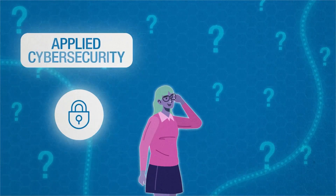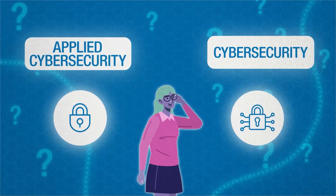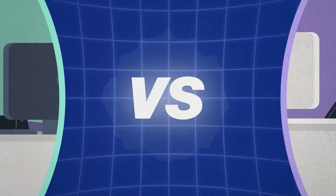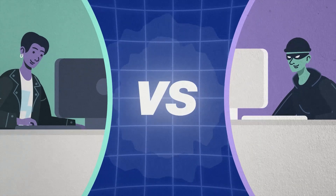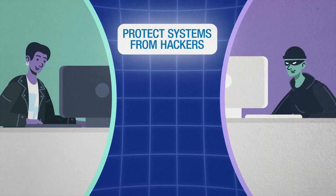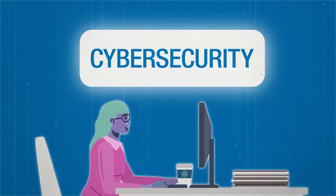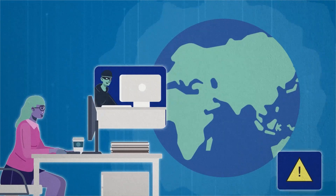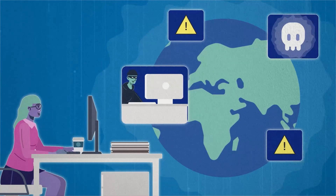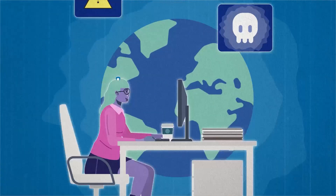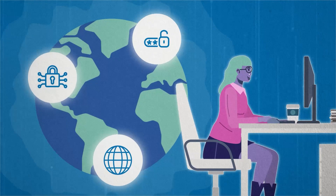Let's take a closer look at applied cybersecurity versus cybersecurity. While they're closely related, they focus on different aspects of the discipline. In applied cybersecurity, you'll be hands-on applying cybersecurity tools, solutions and strategies. You could be working with companies to protect their systems from hackers, prevent data breaches and safeguard sensitive information. Meanwhile, cybersecurity focuses more on understanding the bigger picture — determining how to build secure systems, protect entire networks and stop large-scale cyber attacks. You'll dive deep into topics like cryptography, ethical hacking and the global implications of cyber threats.